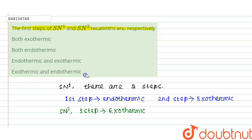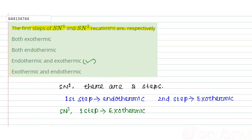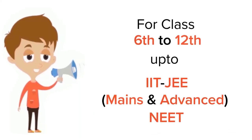Sorry — the question asks for the first step of SN1, which is endothermic. So the answer will be option C: endothermic and exothermic. Thank you. For class 6th to 12th, IIT JEE, and NEET level, trusted by more than 5 crore students.